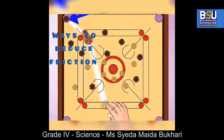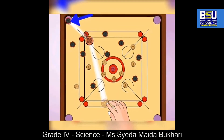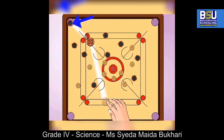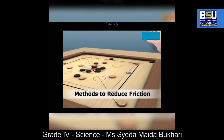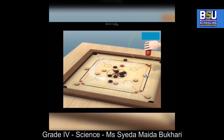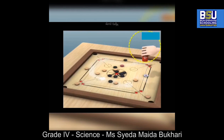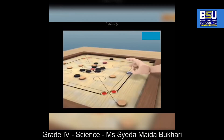I will give you an example of a carom board. If the surface of the carom board is rough, we sprinkle powder on it. The powder particles reduce friction and let the striker and coins move from one end to another using less force.